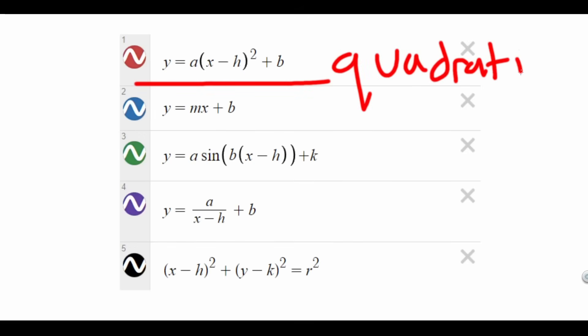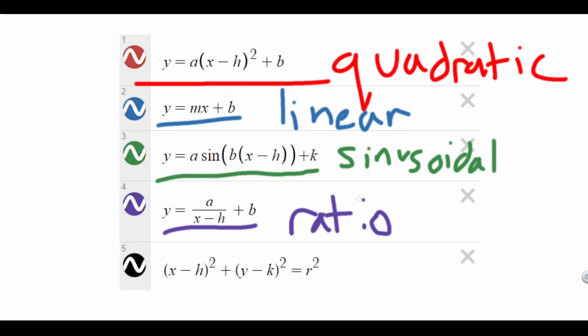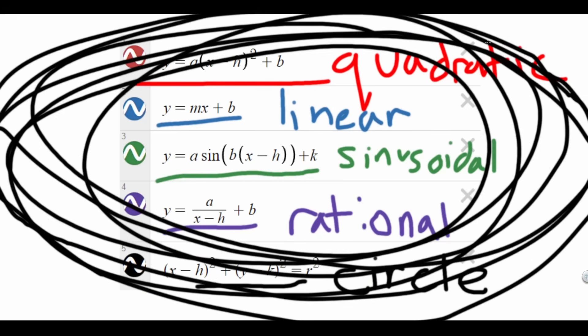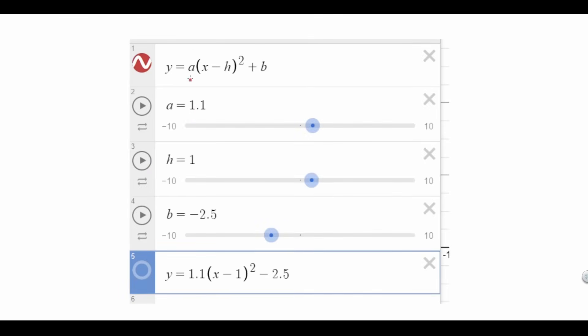The functions that are used the most while graphing are these five, listed in order of most to least used: quadratic function, linear function, sinusoidal function, rational function, and the circle.